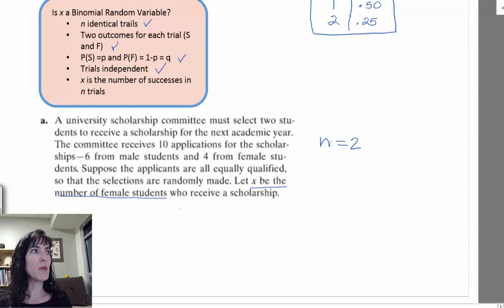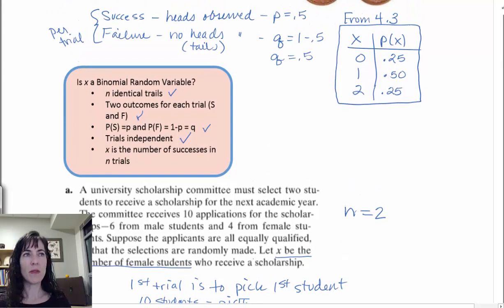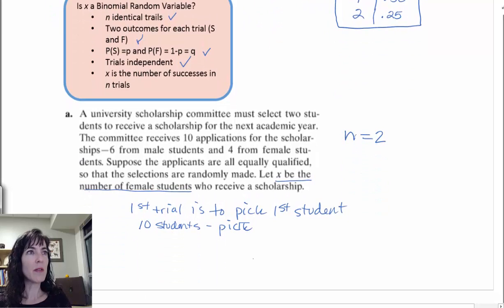So, do we have N identical trials? Well, we have the first trial is to pick the first student. And then, suddenly, my total number goes from, so I had ten students pick one. And now, for my second trial, I need to pick the second student.